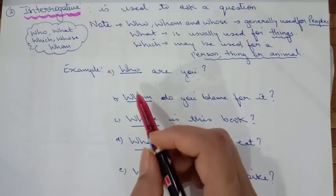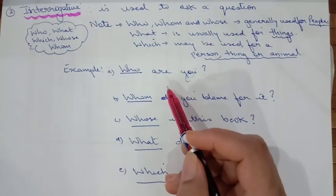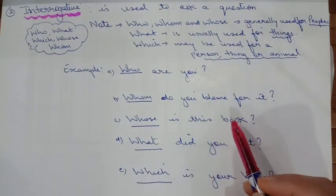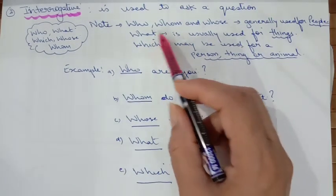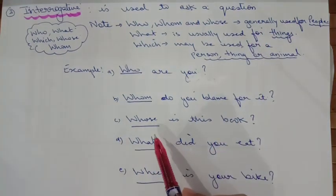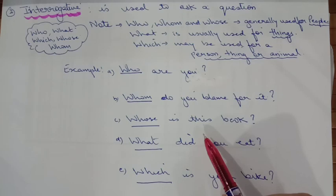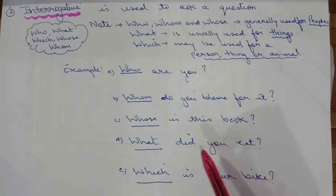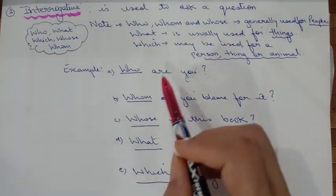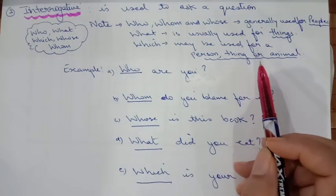For example, if you are asking about a person, you will say 'Who are you?' 'Whom do you blame for it?' I told you that who, whom, and whose are generally used for people. 'Whose is this book?' You are asking about the owner. 'What did you eat?' — you generally want to know about the thing. 'Which is your way?' — which can be used for a thing, a person, or an animal.